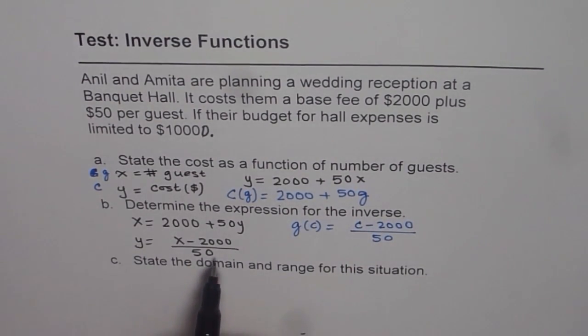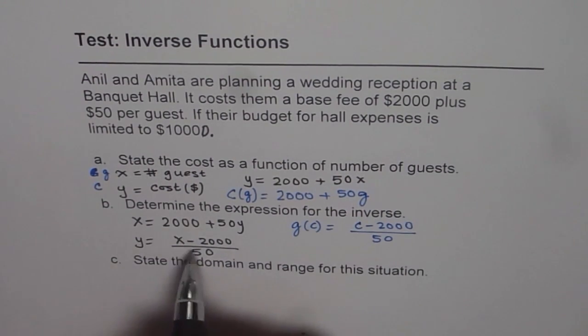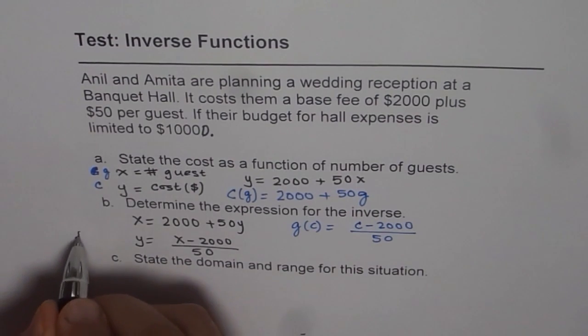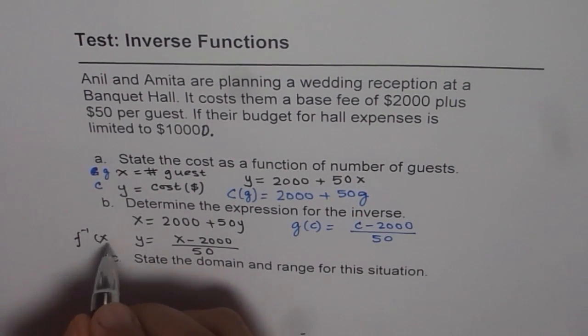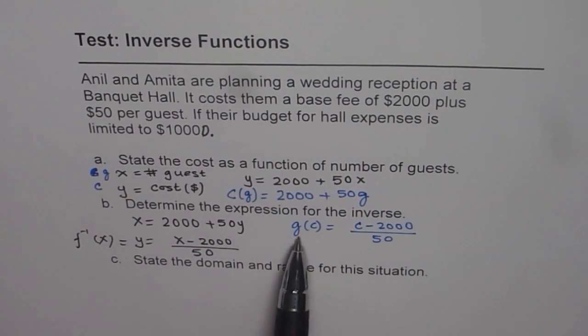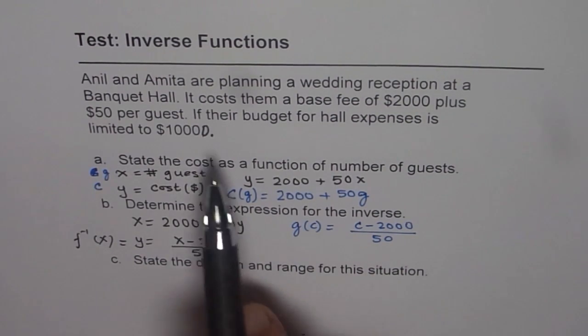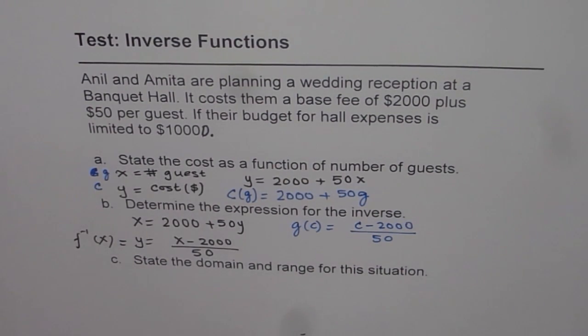Inverse basically here, in this case I should have written f inverse, which is f inverse of x equals this. So that is the number of guests which could be included for the limited expense of $10,000. Now we can calculate what is the maximum number of guests and then write domain and range.